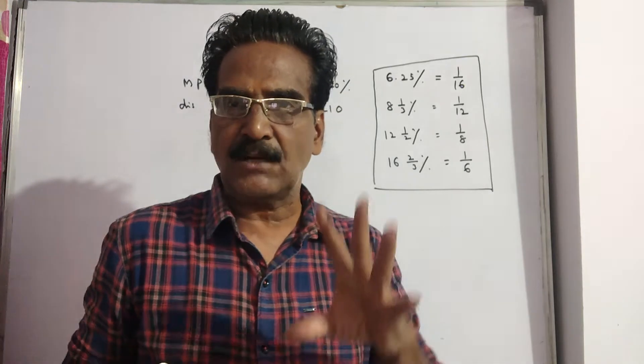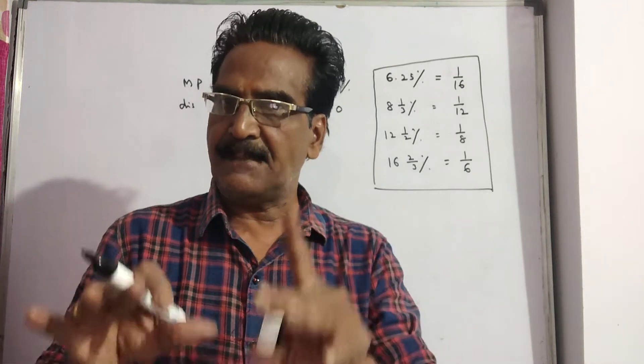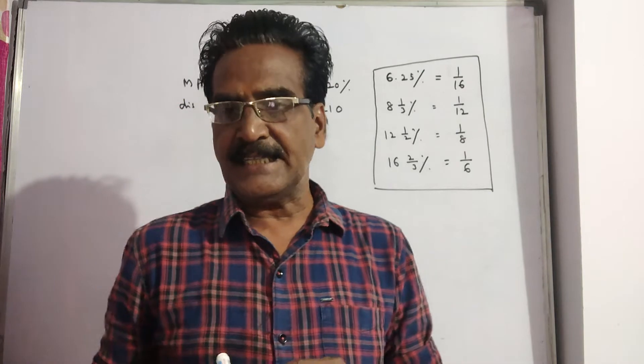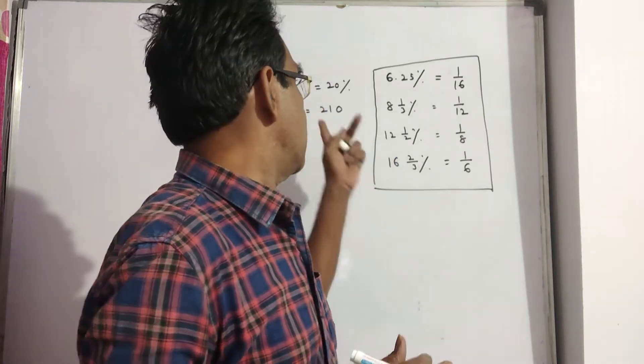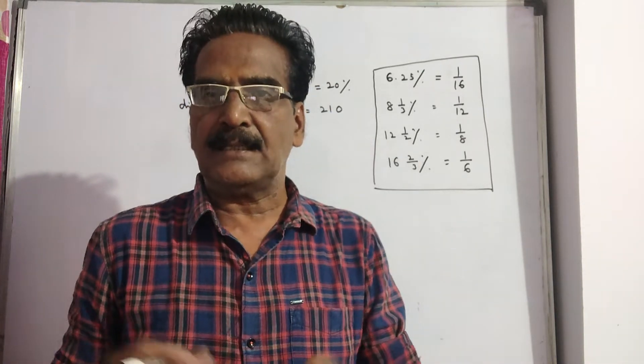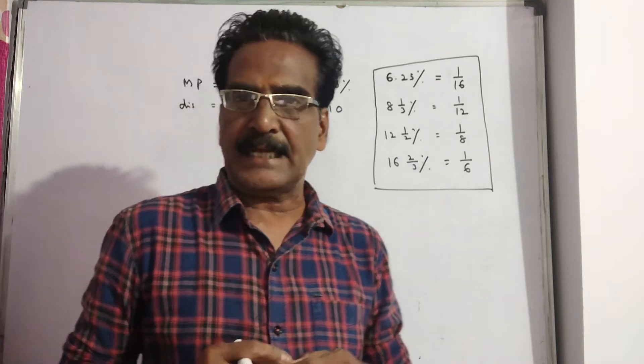Friends, a shopkeeper allows a discount of 12.5% and still makes a profit of 20%. If it costs Rs. 210 for the shopkeeper, then the market price of the article is.